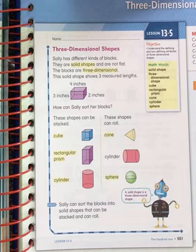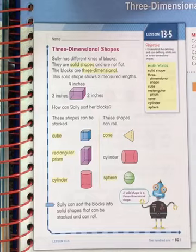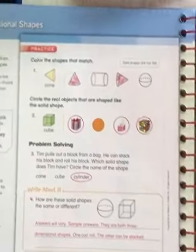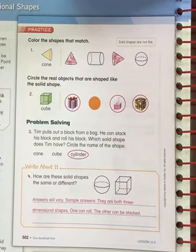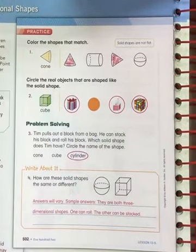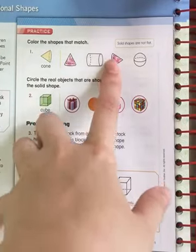Sally can sort the blocks into solid shapes that can be stacked and can be rolled. Go ahead and turn the page to 502. Color the shapes that match. Cone. Go ahead and color in the two cones.